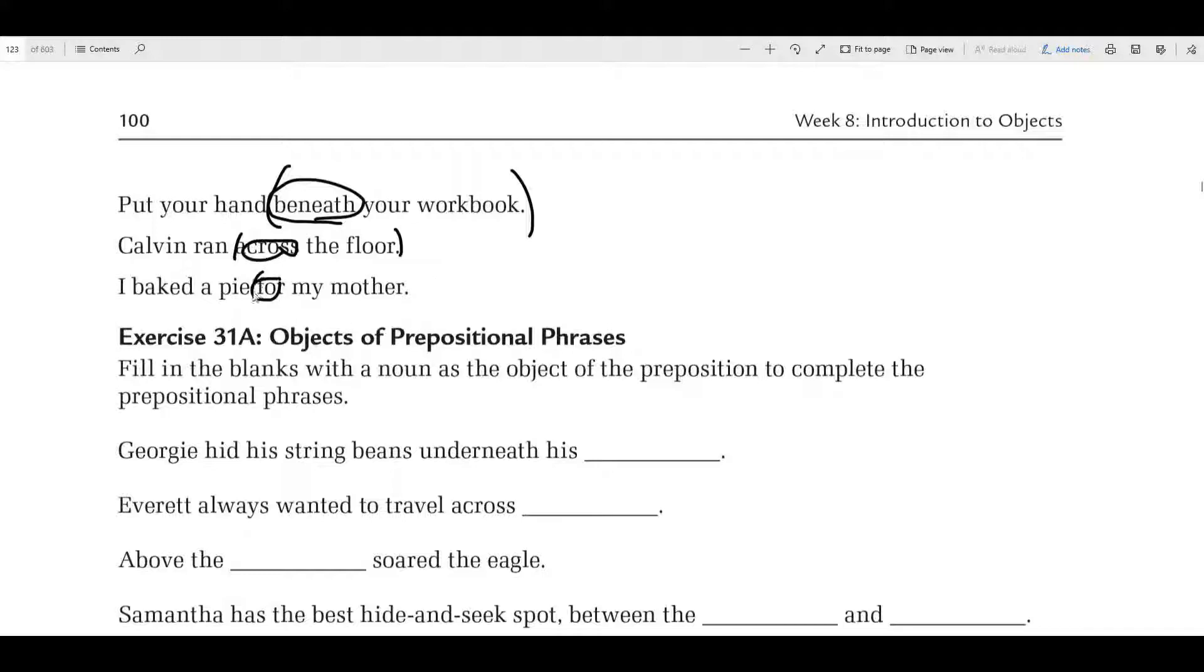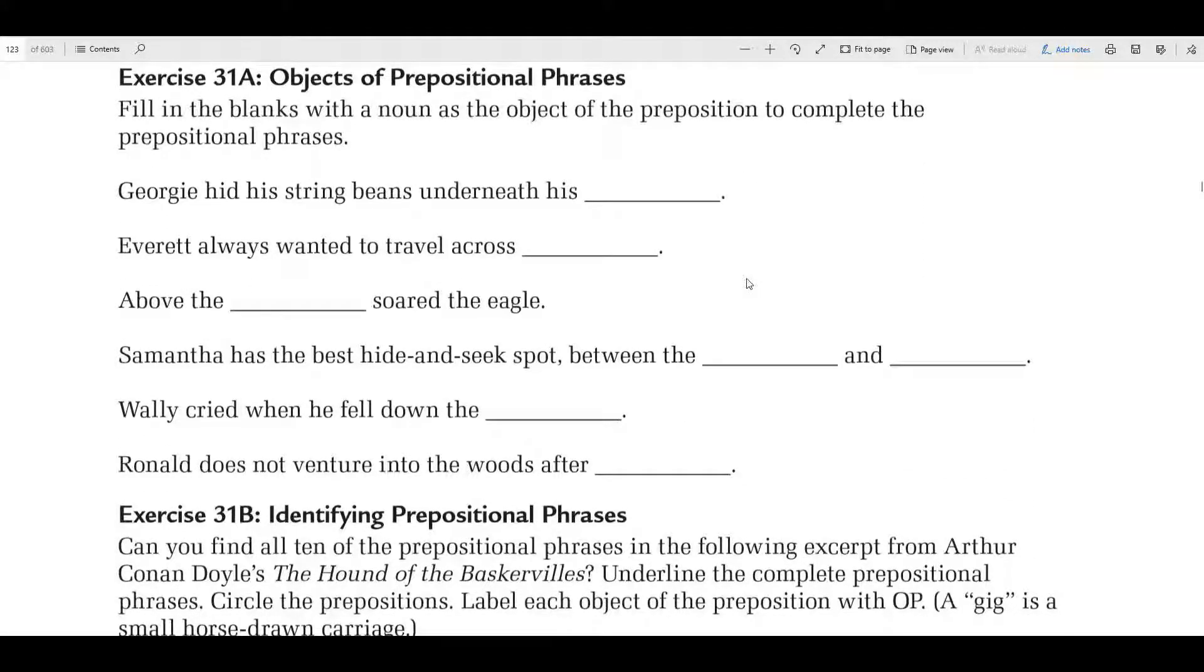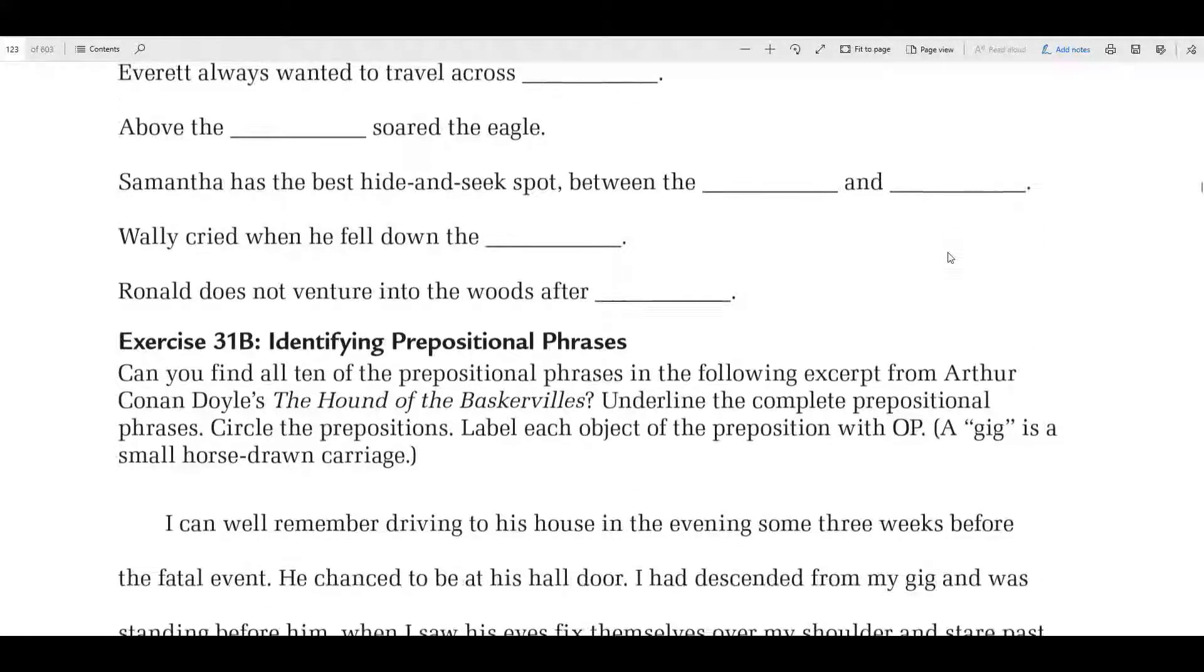All right, on 31A you are going to complete the sentence by giving it an object of the preposition. You're going to complete the prepositional phrase: underneath his, across, above the, between the and, down the, into the woods after. Those are the prepositional phrases and you are going to put in any word that you want. It has to be a noun or a pronoun that would complete those prepositional phrases. Now before you do that, let's move on. You can come back to that because these are going to be whatever words you want to put there.